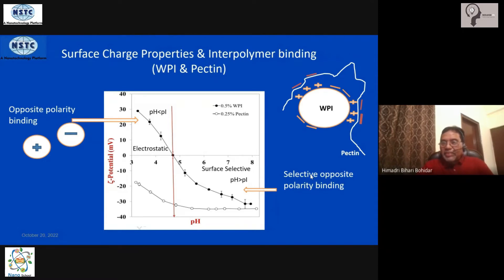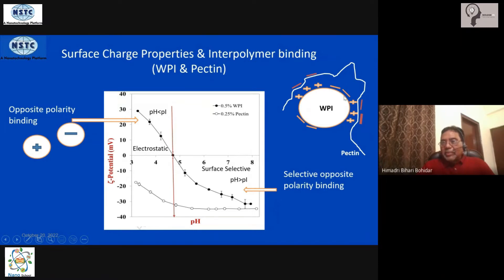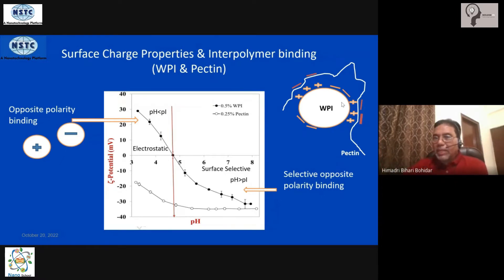Let's look at this picture. On the protein surface, the charge distribution is not homogeneous. Certain amino acids carry a positive charge, and others at different locations carry a negative charge. If you measure this protein you will get a net charge and net zeta potential, which might be positive or negative — but microscopically there is an inhomogeneous surface charge distribution on the protein.